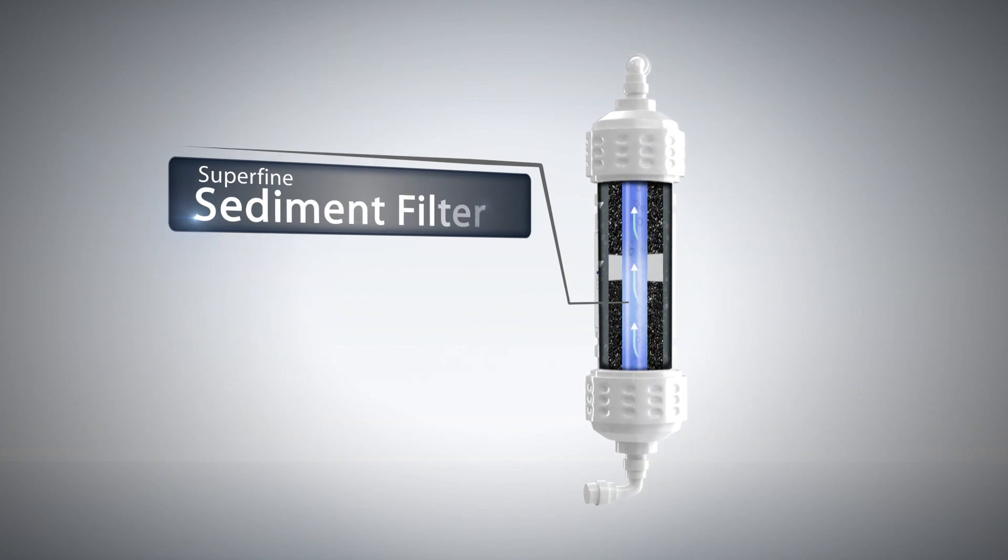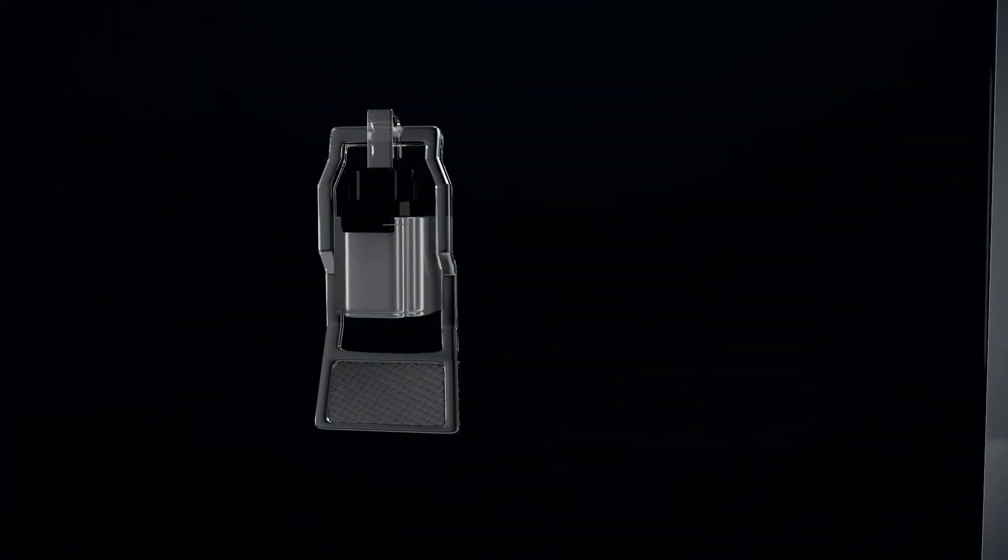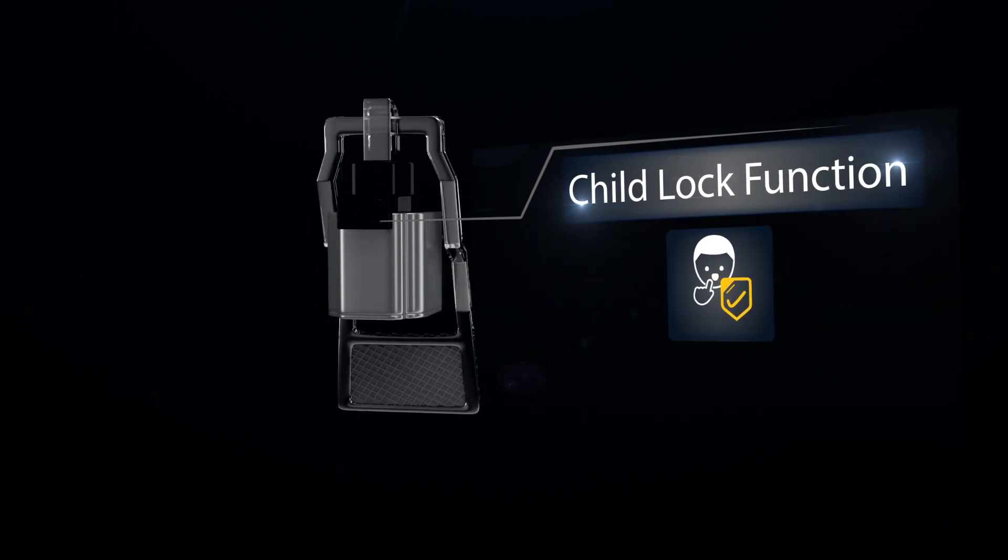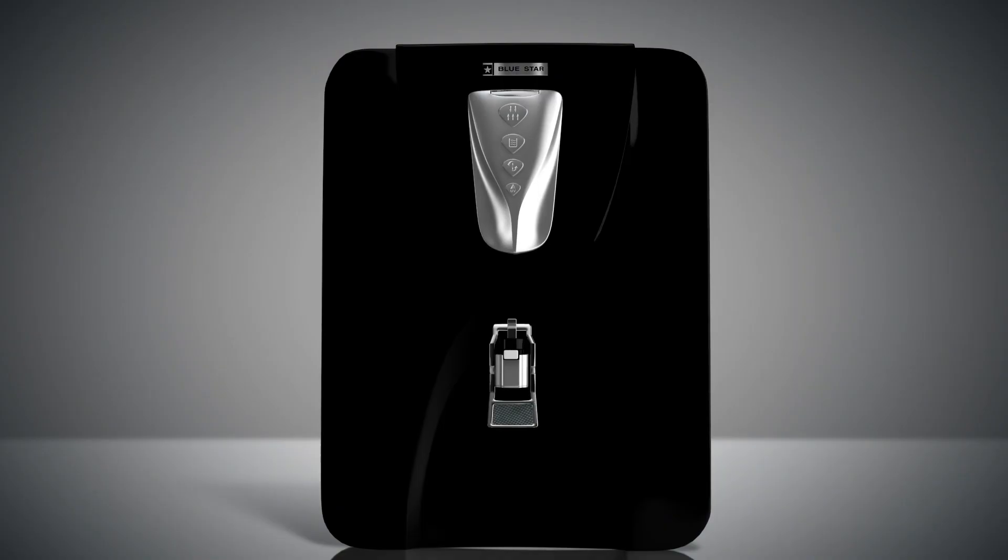Imperia has a super fine sediment filter, a tankful indicator, and a child lock button on the manual tap to protect your purifier from unnecessary wastage of water.